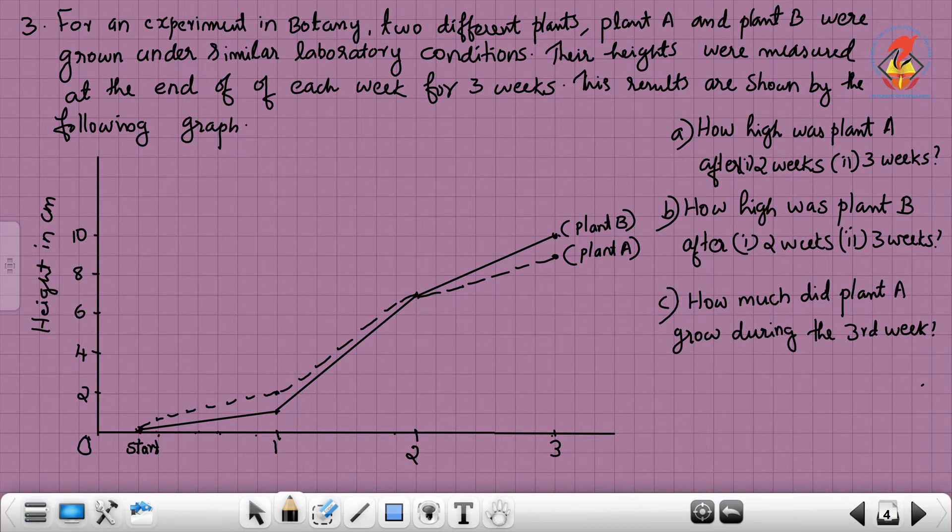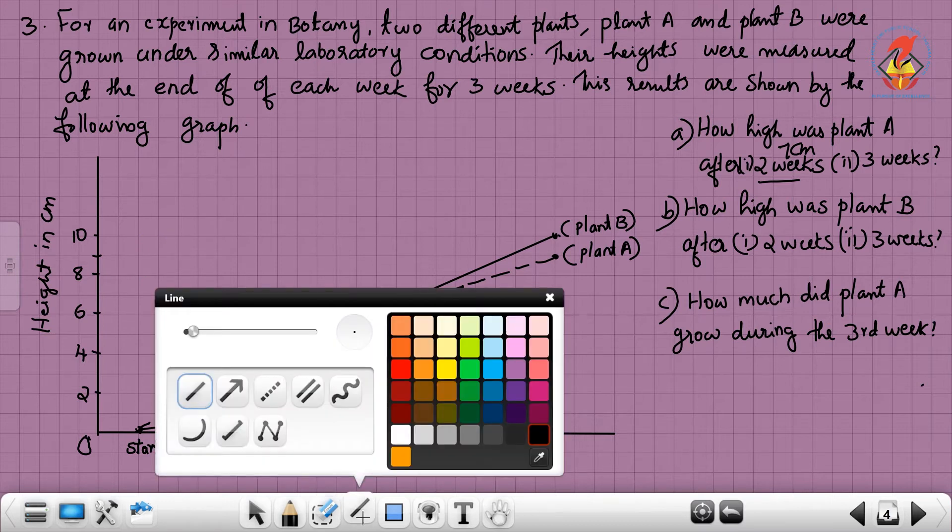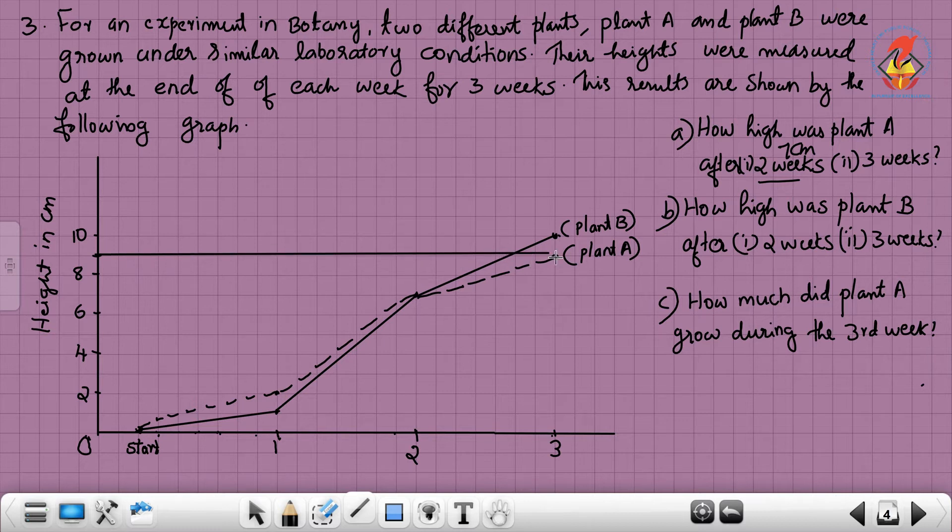How high was plant A after two weeks? After two weeks, plant A was 7 centimeters. You can write the answer: 7 centimeters. In the third week, plant A, the dotted line, shows 9 centimeters.